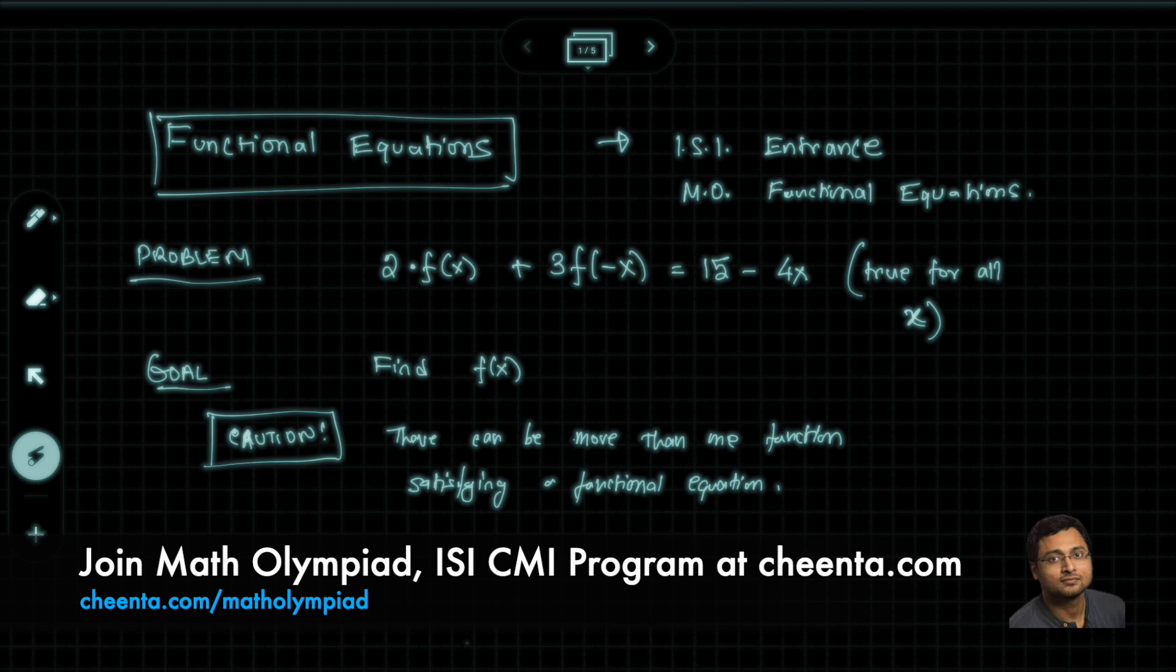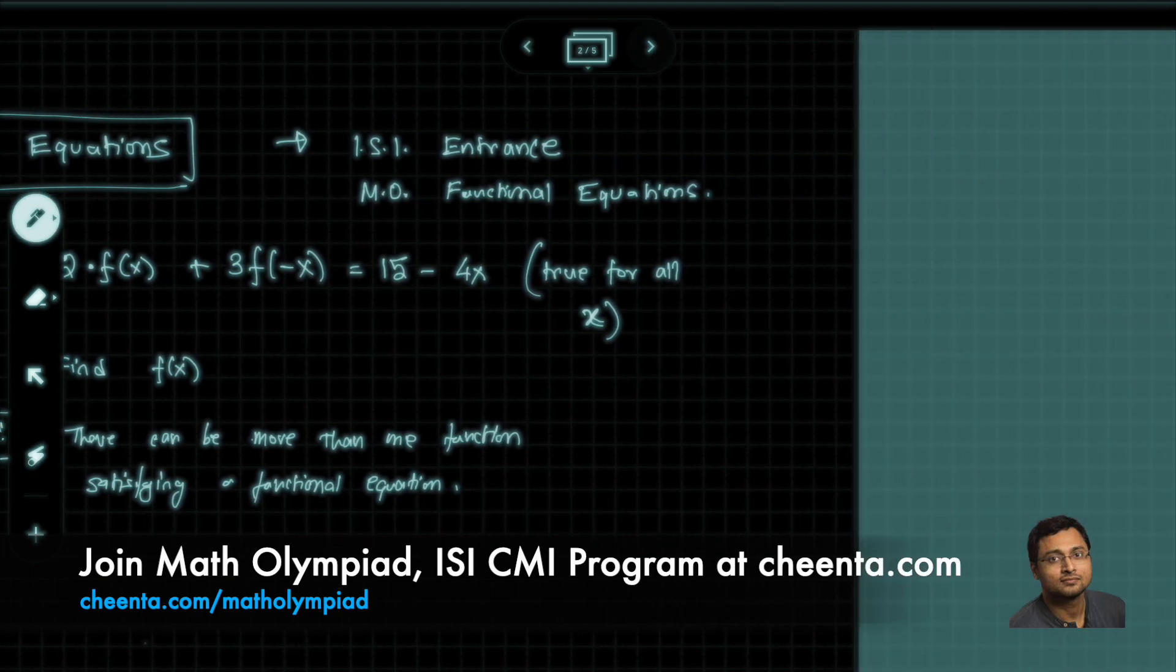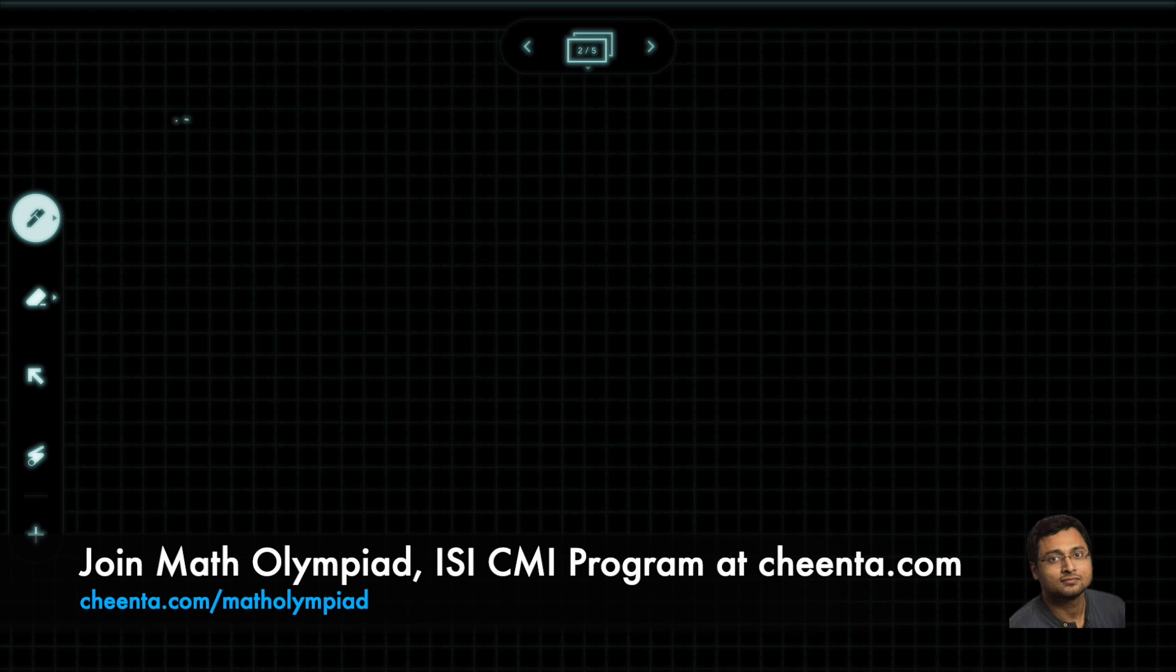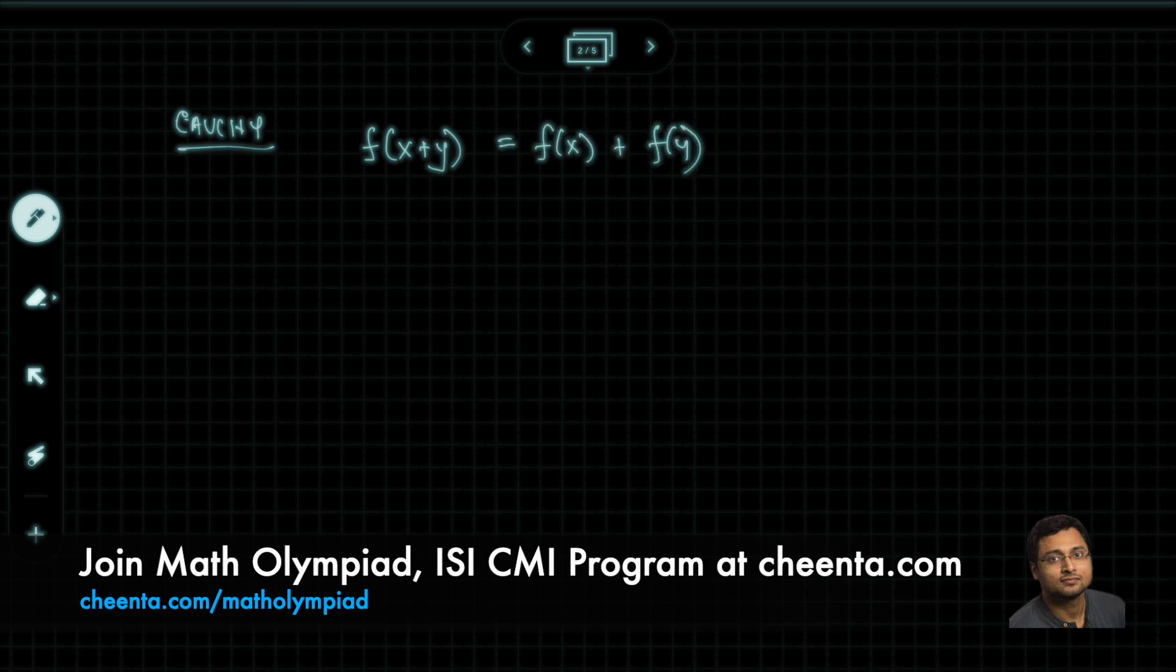There is a very famous functional equation problem. This is called Cauchy's functional equation. It is like this: f(x+y) is equal to f(x) plus f(y). It's very easy to try this problem when x, y are rational numbers. It's a little bit harder when you work with real numbers. Then you have to assume something else, for example, you may have to assume the function is continuous.